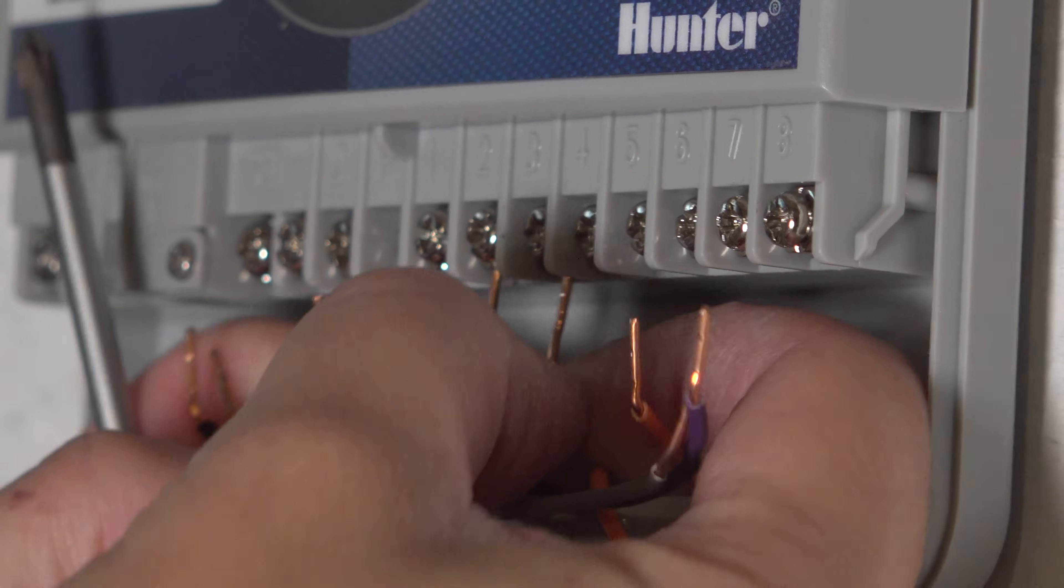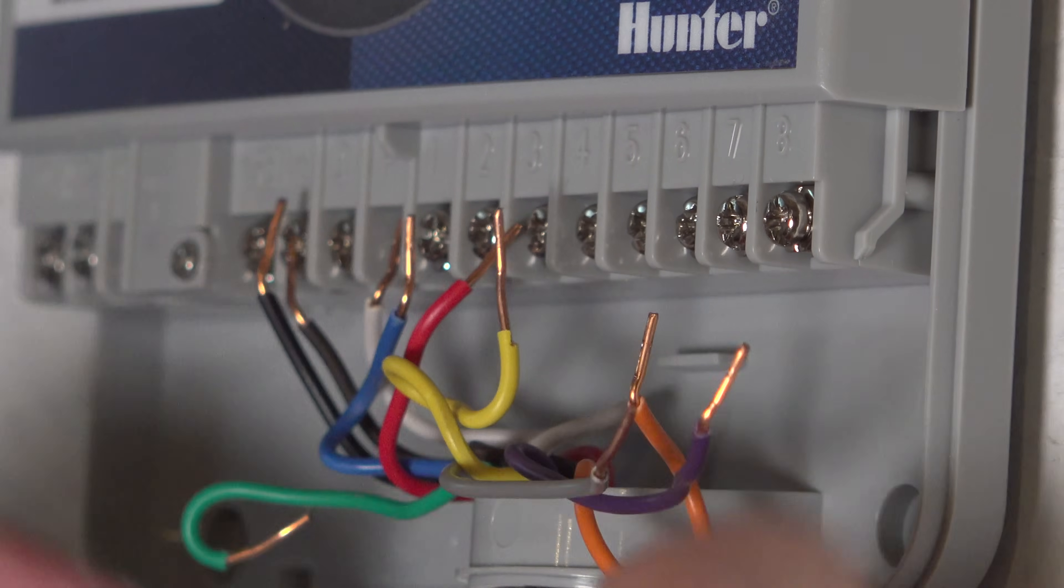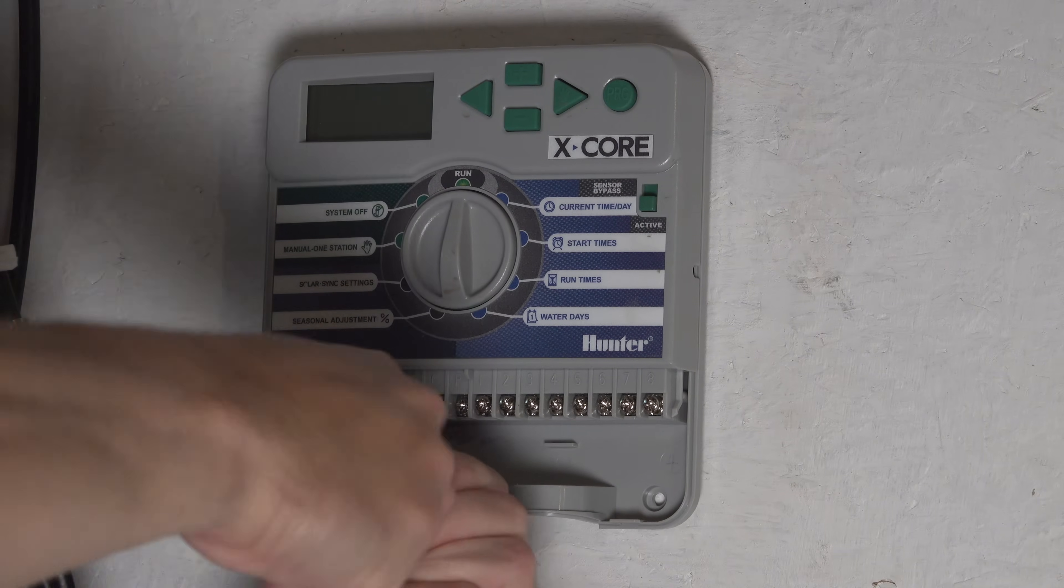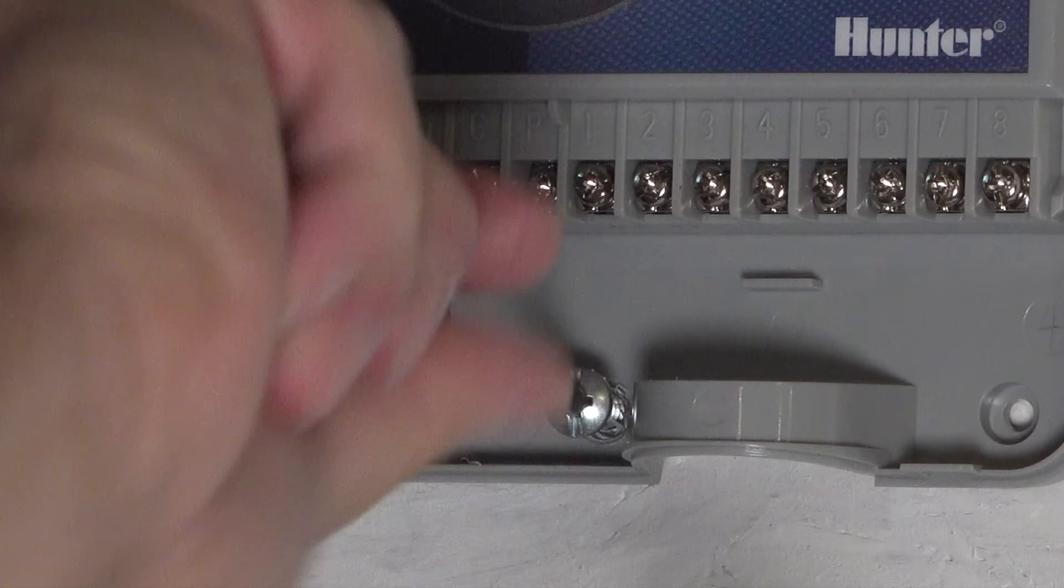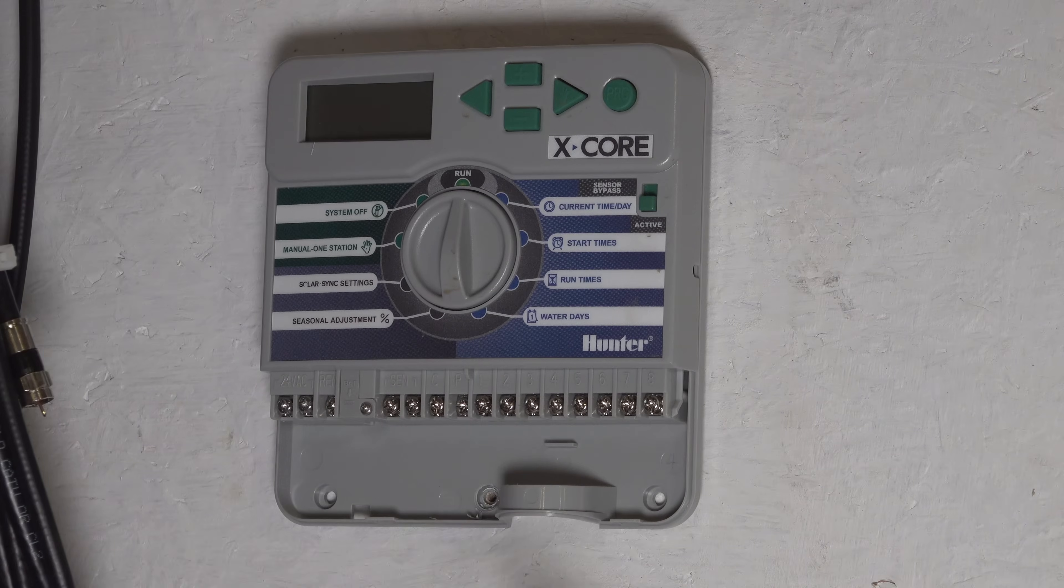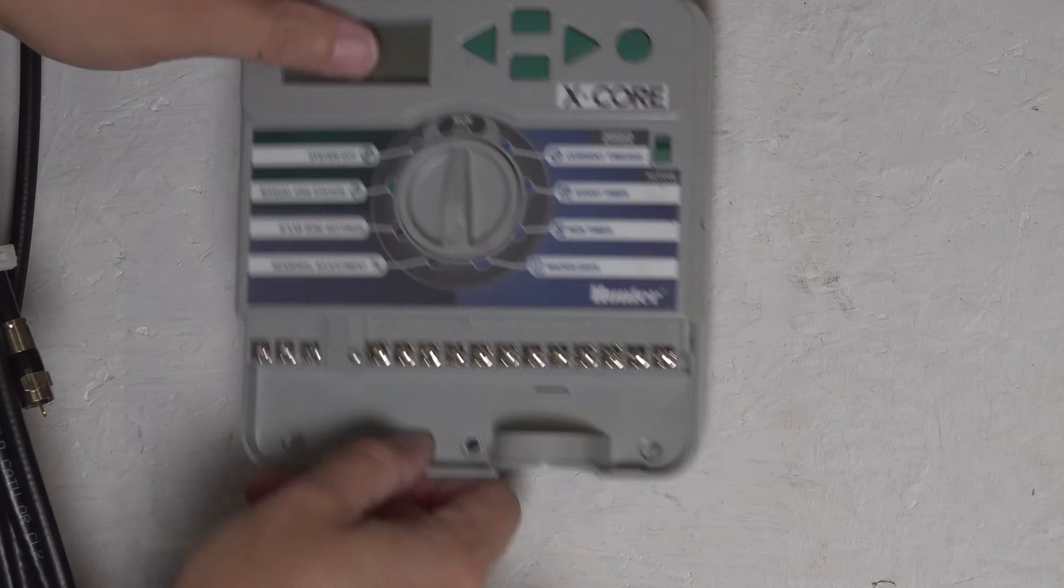With the wires out, we can remove our old controller. That's easy to do. You're going to start by removing any visible screws like this. And then once that's out, you can go ahead and slide the unit upward or possibly to the side to remove it.